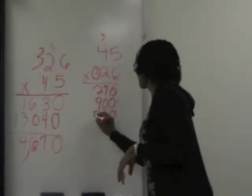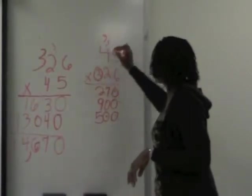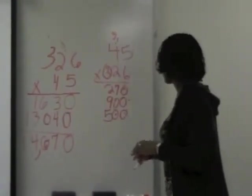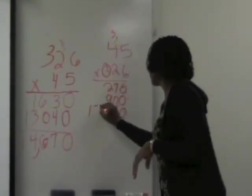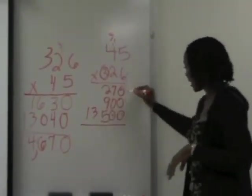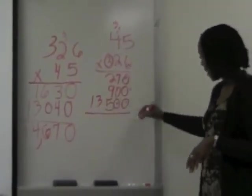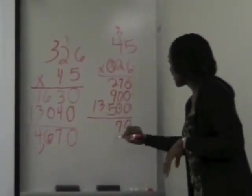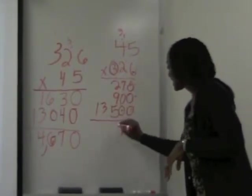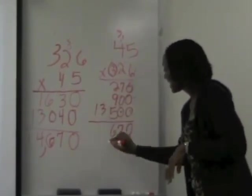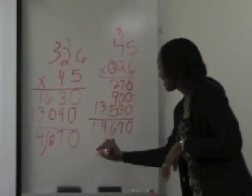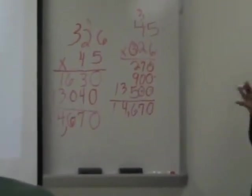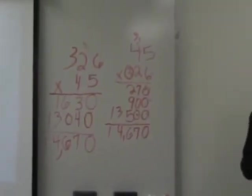Carry 1, and 3 times 4 is 12, plus 1 is 13. Now we start adding from the right side: 0, then 7, then — help me out class — 16, carry 1, then 4, then 1. That gives us 14,670 — the same answer. That's the long, traditional way of checking.